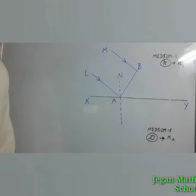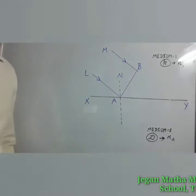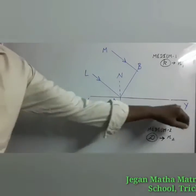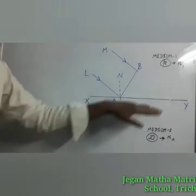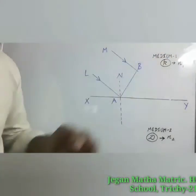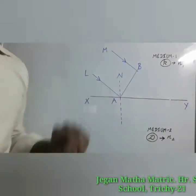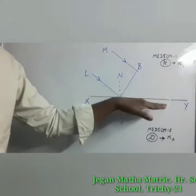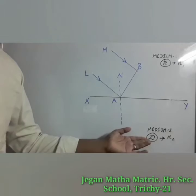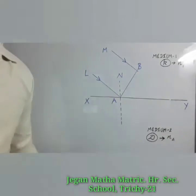Let us consider a parallel beam of light incident on a refracting plane surface XY. Above the refracting surface we have the first medium, which is the rarer medium with refractive index n1. Below the refracting surface we have the second medium, which is the denser medium with refractive index n2.